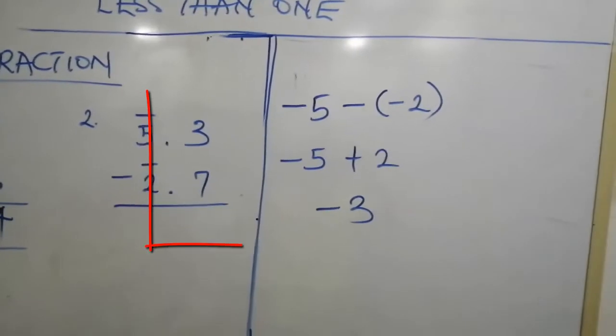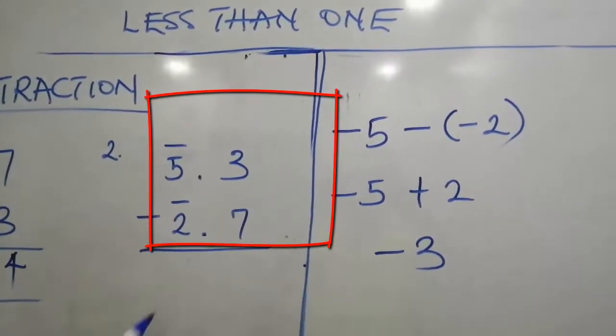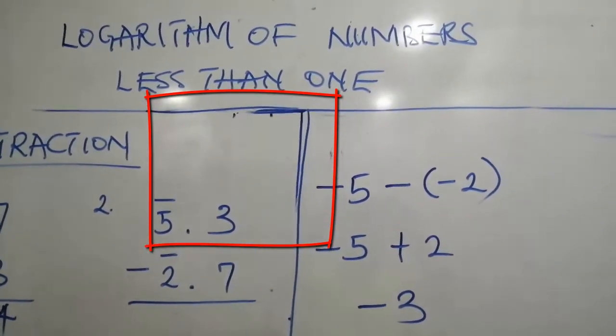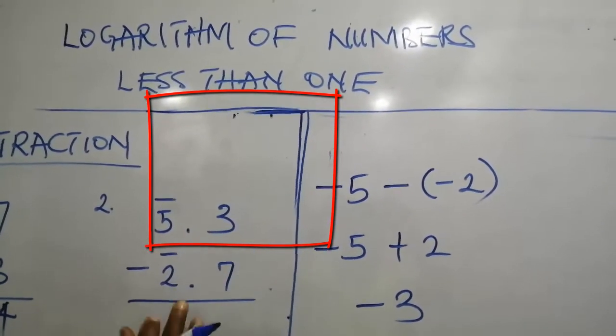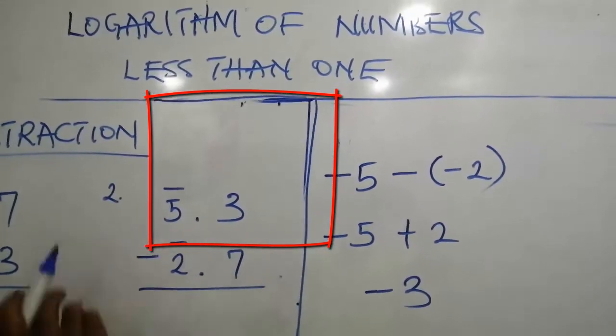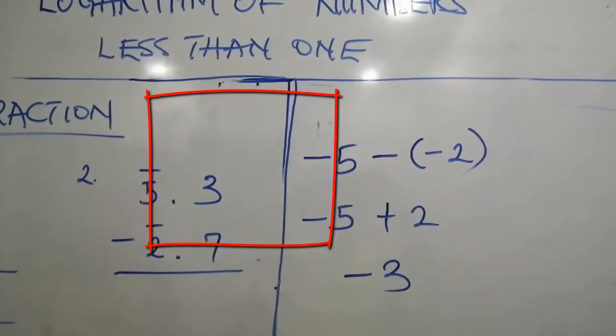Let us see the second example. Bar 5.3 minus bar 2.7. That is, you are taking bar 2.7 away from bar 5.3. 7 away from 3. You said it is impossible. It is possible.